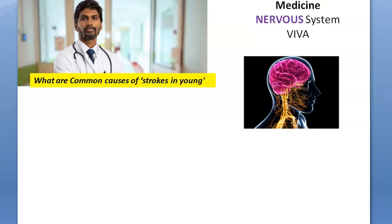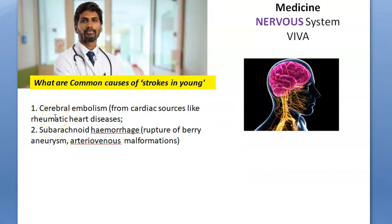What are common causes of stroke in young people? In young people, embolism is a common cause — from rheumatic heart disease or atrial fibrillation. Hemorrhage can occur due to rupture of an aneurysm or AV malformation. Other causes include vasculitis, hyperviscosity syndrome, accelerated atherosclerosis, demyelinating disease like multiple sclerosis, neoplasm, head injury, anticoagulant therapy, hemiplegic migraine, pro-coagulant states, cerebral malaria, venous sinus thrombosis, drug abuse such as cocaine, and use of oral contraceptive pills, which can cause thromboembolic strokes.